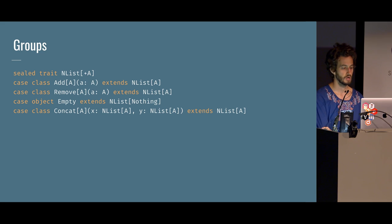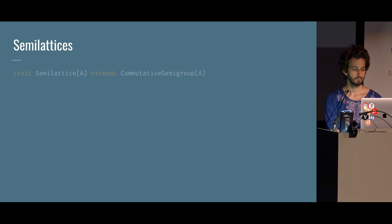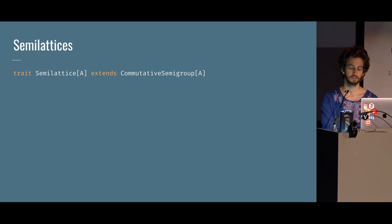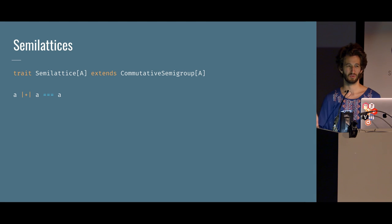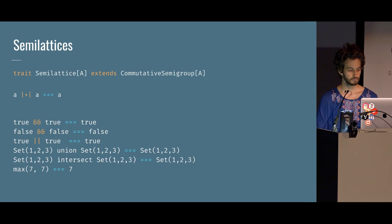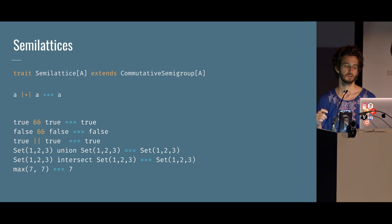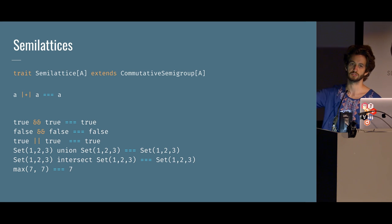The next algebraic structure is semilattice. It extends commutative semigroup — it's not a monoid, but it is a semigroup — and the only thing it adds is idempotency: A combined with A is still A. For example, Boolean forms two different semilattices: true AND true is still true; false AND false is still false; true OR true is still true. This applies to set union and intersection, and to taking the maximum or minimum of a number.